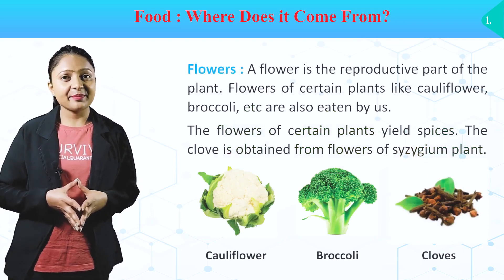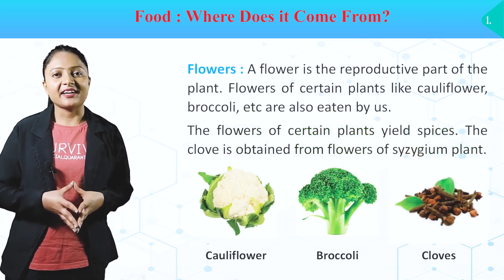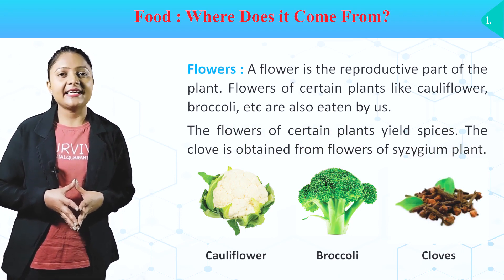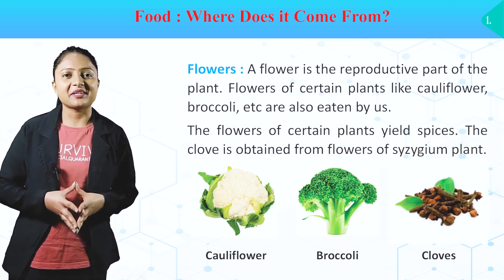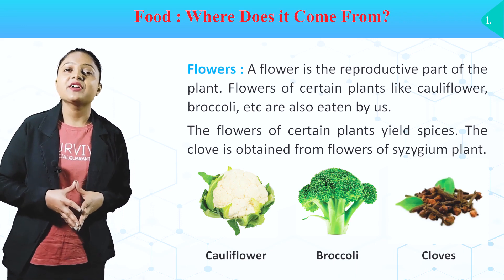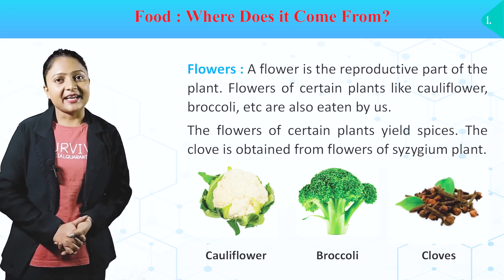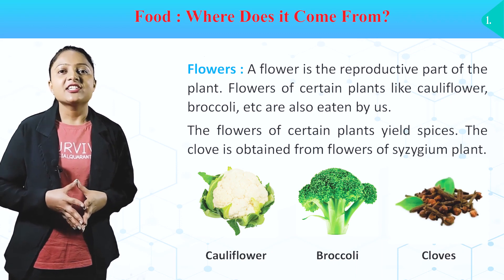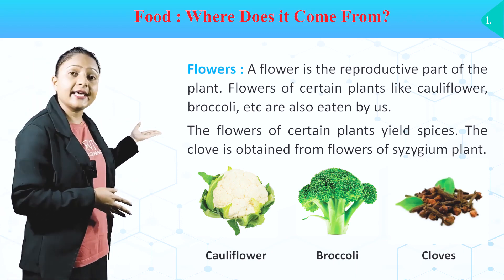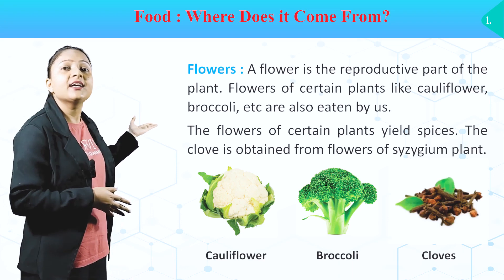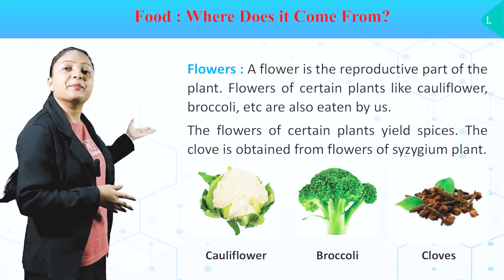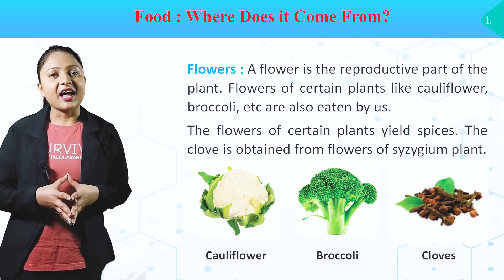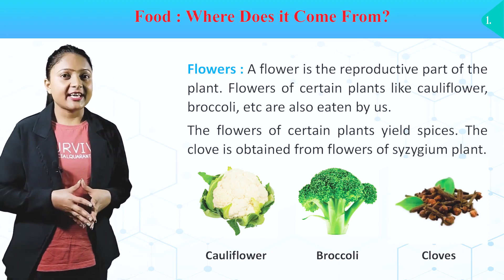Flowers. A flower is the reproductive part of the plant. Flowers of certain plants like cauliflower, broccoli, etc. are also eaten by us. The flowers of certain plants yield spices. The clove is obtained from flowers of a Syzygium plant. Yeh kuch flowers ke pictures hai — cauliflower, broccoli and cloves. Toh plant ke flowers bhi food provide kerte hai.